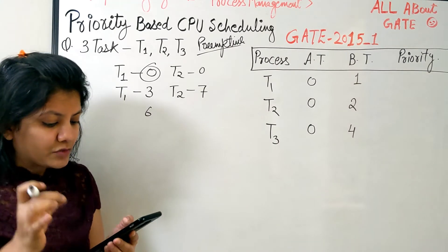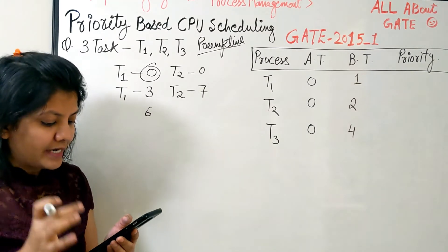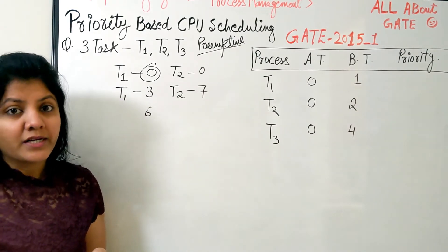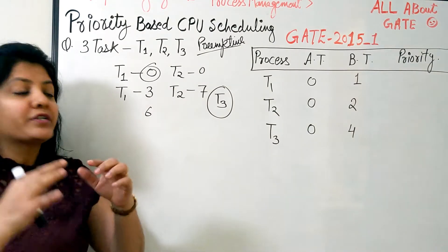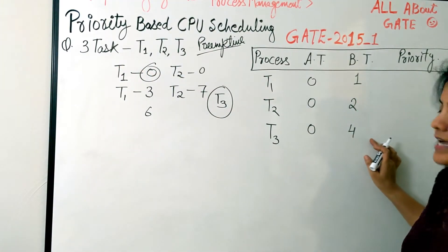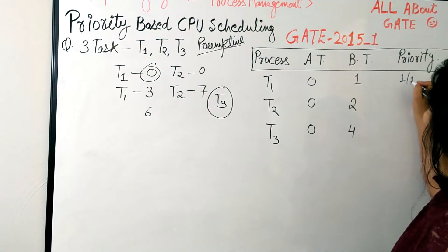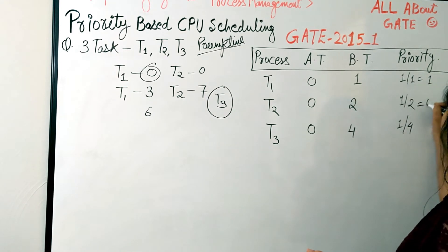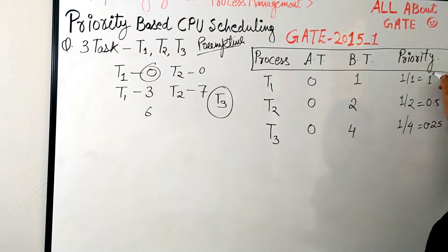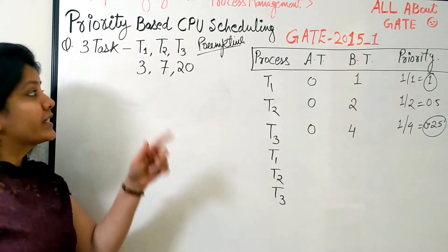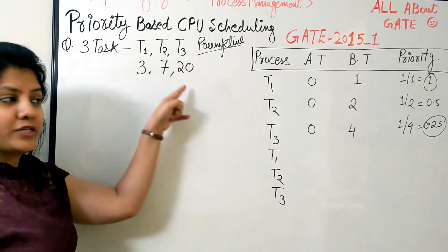This is a numerical answer type question: we must find the completion time of T3's first instance. The priority is the inverse of the period, so T1 has priority 1/1 = 1, T2 has 1/2 = 0.5, and T3 has 1/4 = 0.25. Clearly T1 has the highest priority and T3 has the lowest.